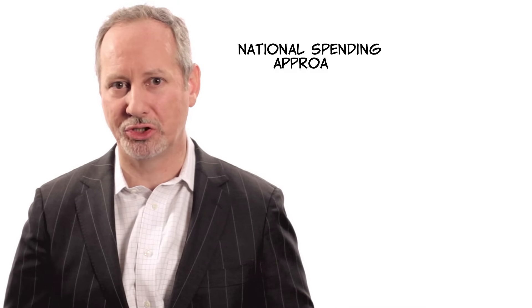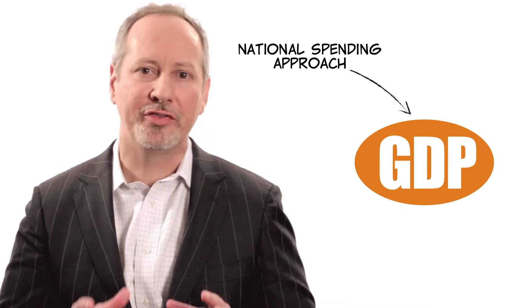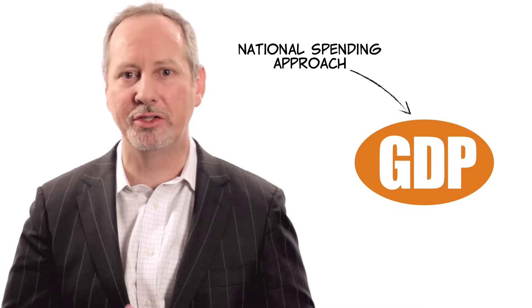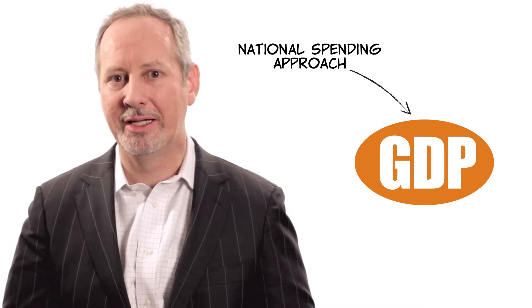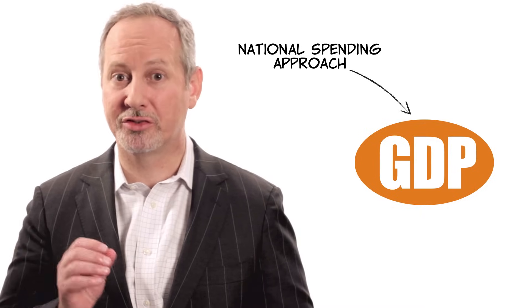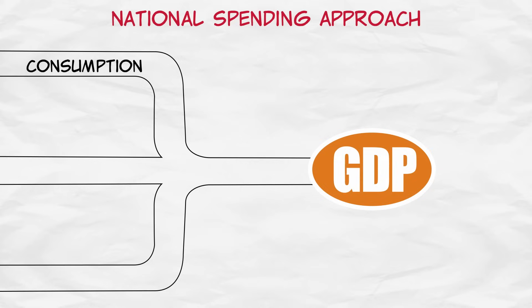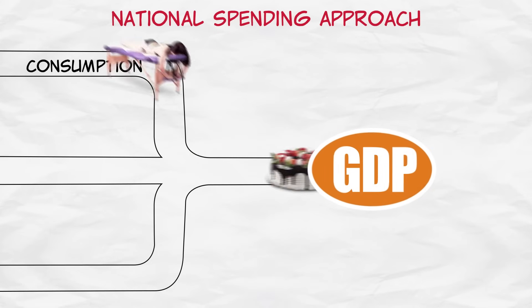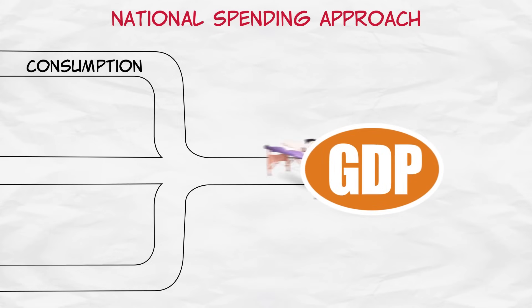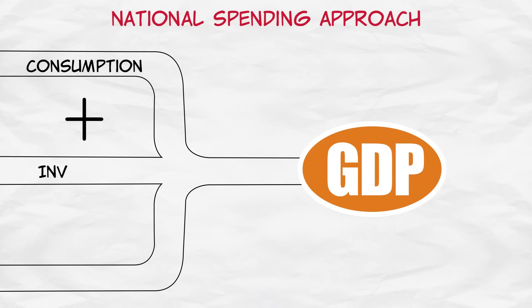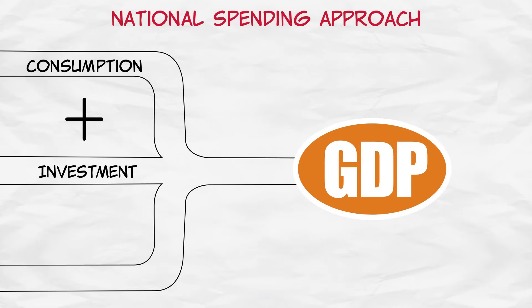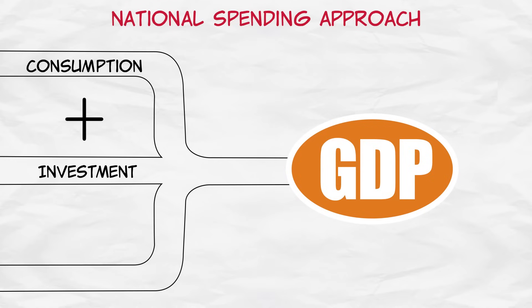First up, the national spending approach. This takes all the goods and services that go into GDP and splits them into consumption — goods and services like cakes and massages bought by consumers — and investment, goods and services like computers or tractors, usually bought by businesses.